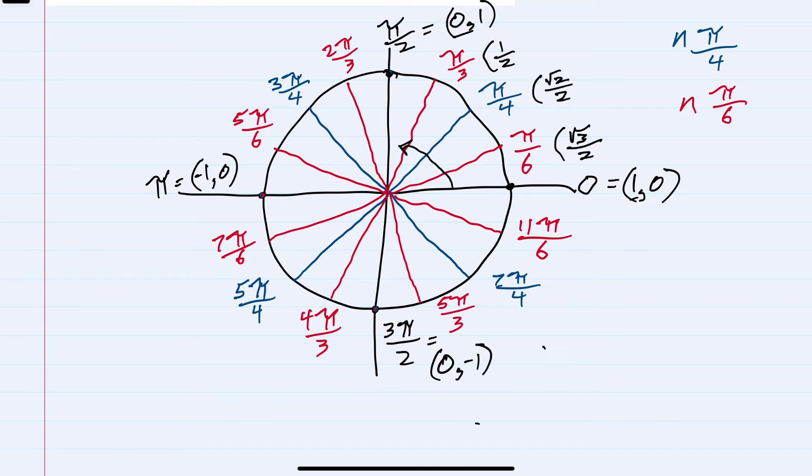And the opposite pattern works for our y's. So we started with zero, which is the square root of 0 over 2. Then the square root of 1 over 2 is just 1/2. The square root of 2 over 2. And then the square root of 3 over 2. Next would be the square root of 4 over 2, which is just one.